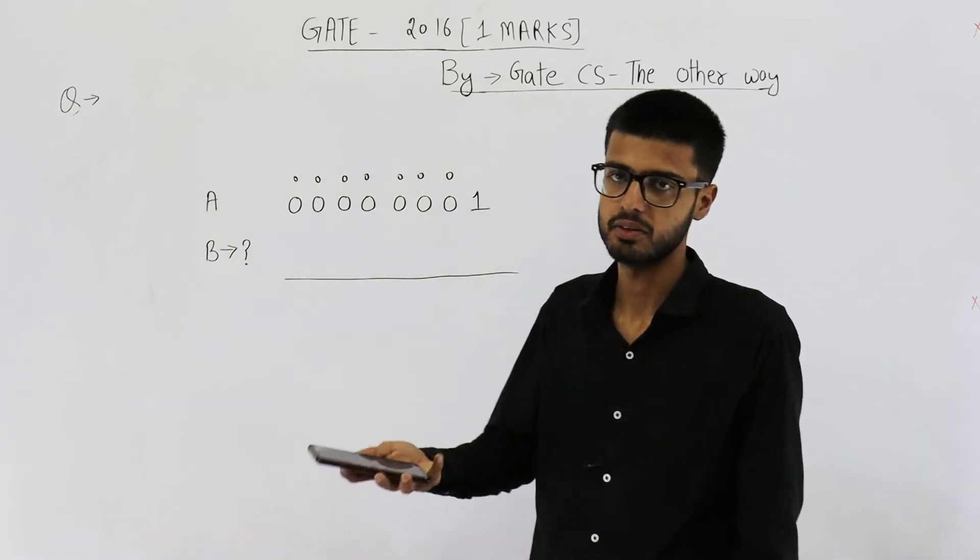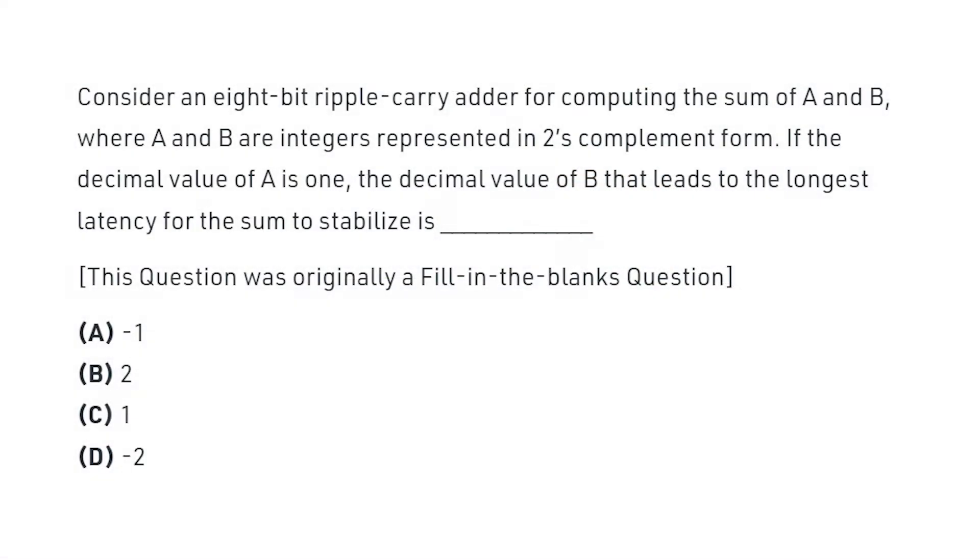First of all, let us read the statement. Consider an 8-bit ripple carry adder for computing the sum of A and B, where A and B are integers represented in 2's complement form. If the decimal value of A is 1, the decimal value of B that leads to the longest latency for the sum to stabilize is.